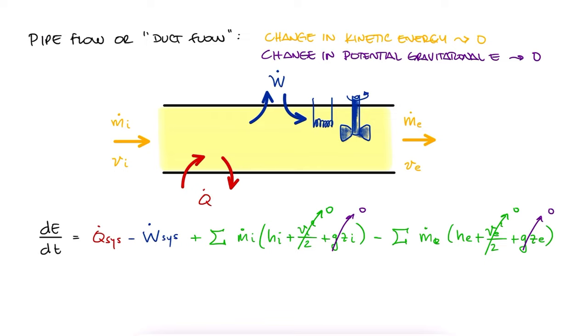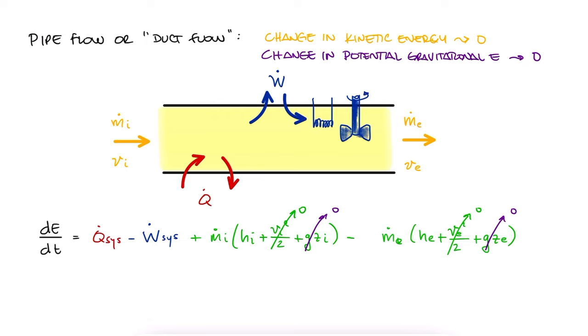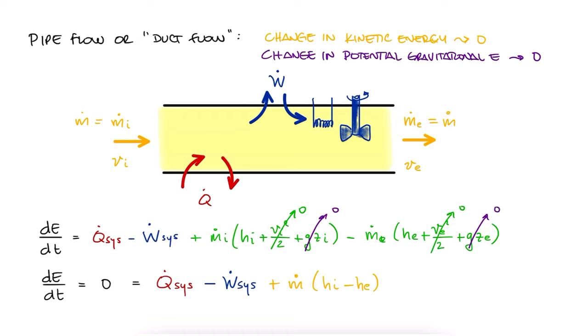Additionally, these pipes are ducts that usually just have one inlet and one outlet, which means that there's no summation for mass energy transfers, and if the system is at steady-state, the change in energy over time is zero, and also equal to the net heat transfer rate of the system, minus the net work rate of the system, plus the mass flow rate times the change in specific enthalpy. And that's pipe flow.